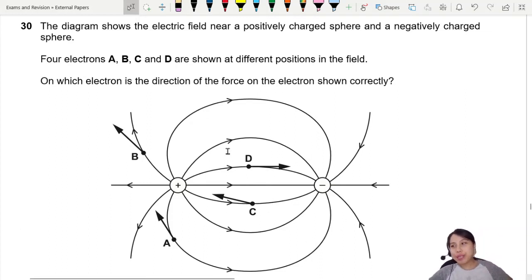Here's a beautiful electric field pattern from two charges, opposite charge. The diagram shows the electric field for a positive and negative charge. Four electrons are at four different positions: A, B, C, and D. On which electron is the force shown correctly?